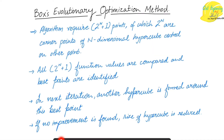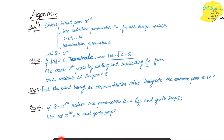Hello everyone. In Boggs evolutionary optimization method, basically what we do is we are given a multivariable function. We start with a point and we search the neighborhood points at a certain interval. We search along that point in a specific interval and see if the neighboring points are giving the minimum value or not. To better understand this method, let us first discuss the algorithm, and through that we will do a numerical example to get a better understanding.